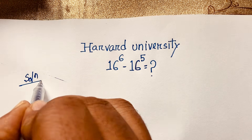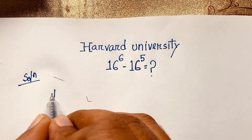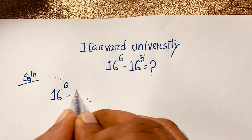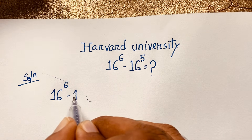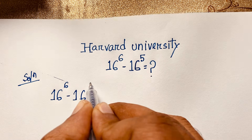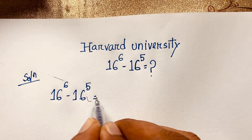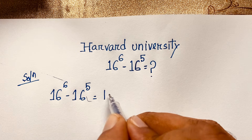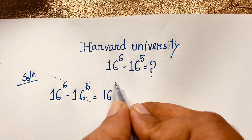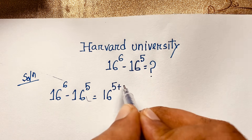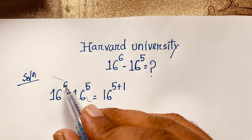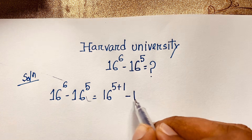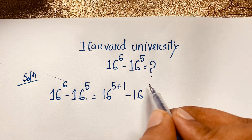Our question is 16 power 6 minus 16 power 5. Now you can see that this 6 can be written as 5 plus 1, so we have 16 to the power 5 plus 1 minus 16 to the power 5.